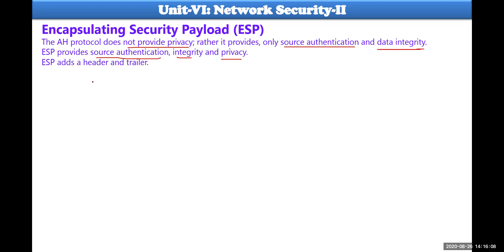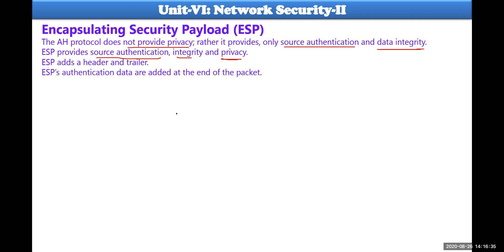An important point to understand: in AH protocol, there is no trailer. AH header and AH trailer cannot both exist. Whereas ESP can be added in two different places - one before the payload as a header and after the payload as a trailer. That is why ESP can also provide privacy. ESP's authentication data is added at the end of the packet, and zeros are padded there so the size of the packet reaches 512 bits.